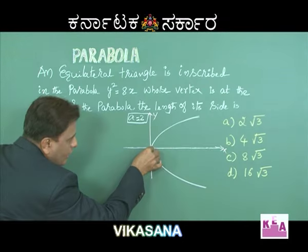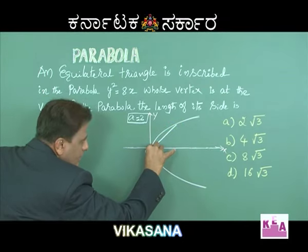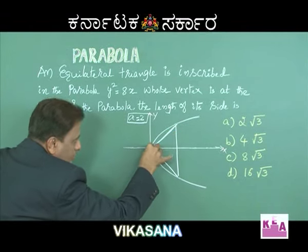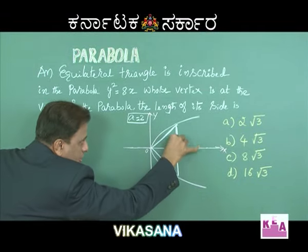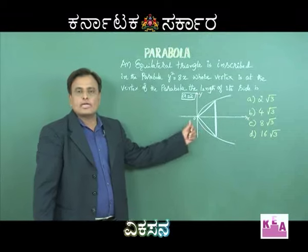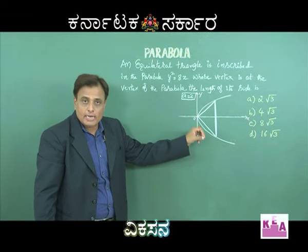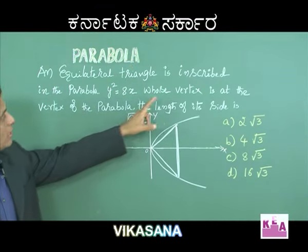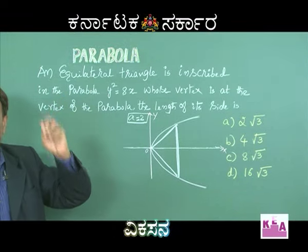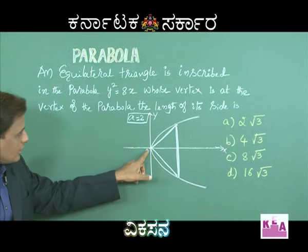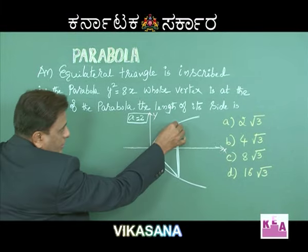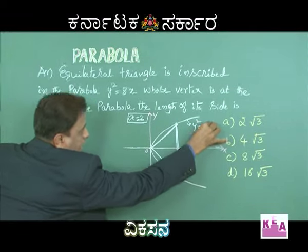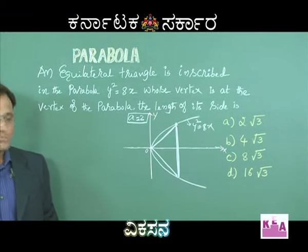According to the question, the equilateral triangle is inscribed in the parabola with one vertex at the vertex of the parabola. Please imagine the equilateral triangle - the diagram is not to scale. The equation of the parabola is y² = 8x.